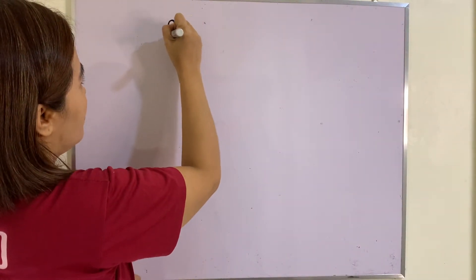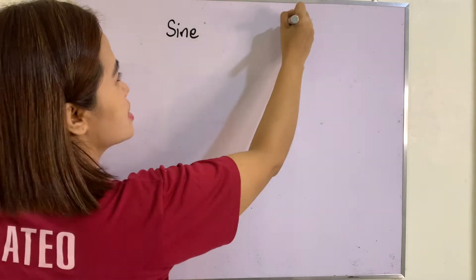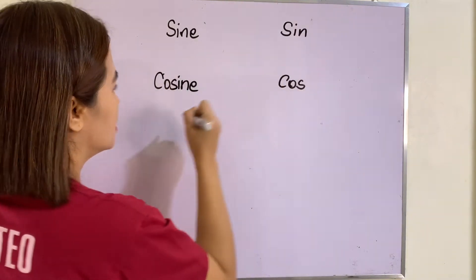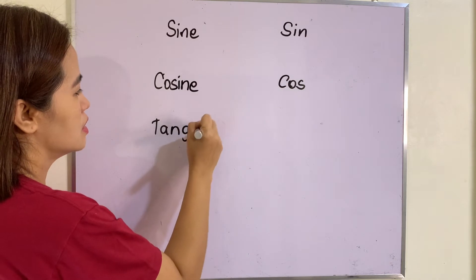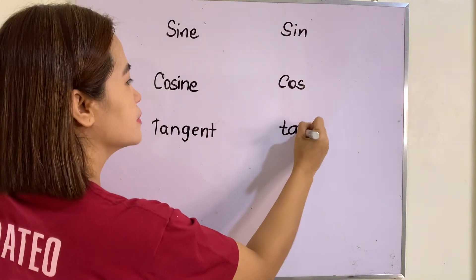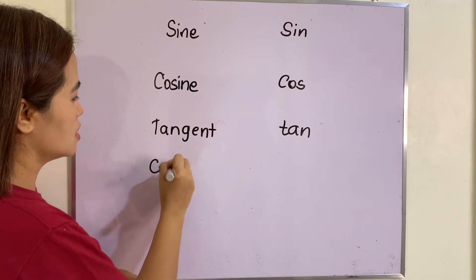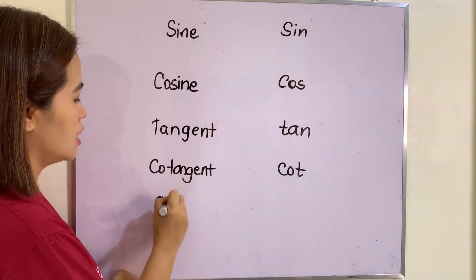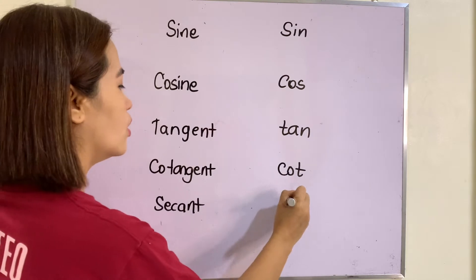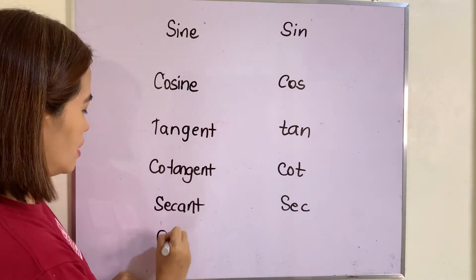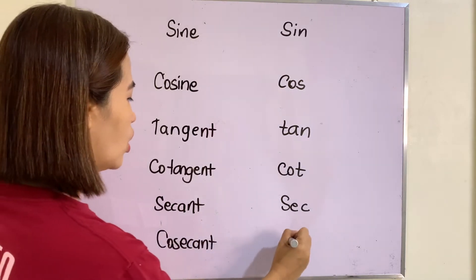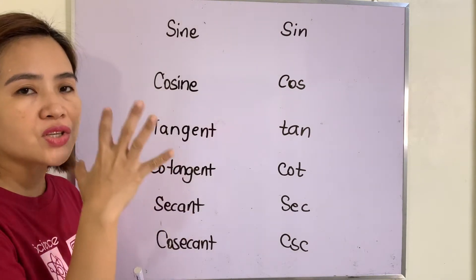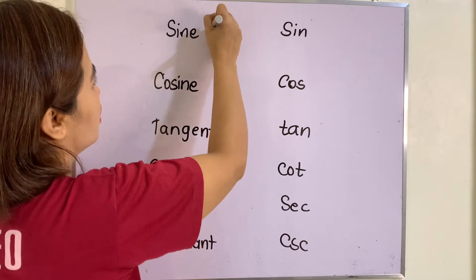There are six circular functions, namely sine or sin, cosine or cos, tangent or tan, cotangent or cot, secant or sec, and cosecant. Always remember that these circular functions are always followed by an angle theta.